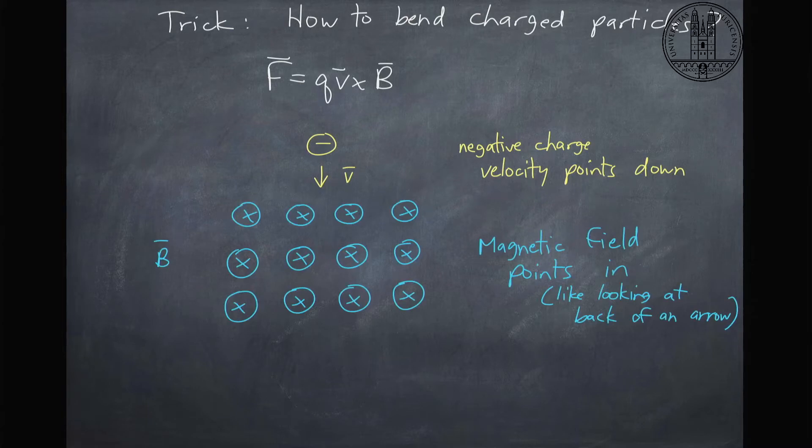They could enter a magnetic field that's pointing in. So inward, as it looks like the magnetic field is pointing away from us, we see like the back of an arrow here. That's the reason for these X's for the B field. And so what is the direction of the force in this case?